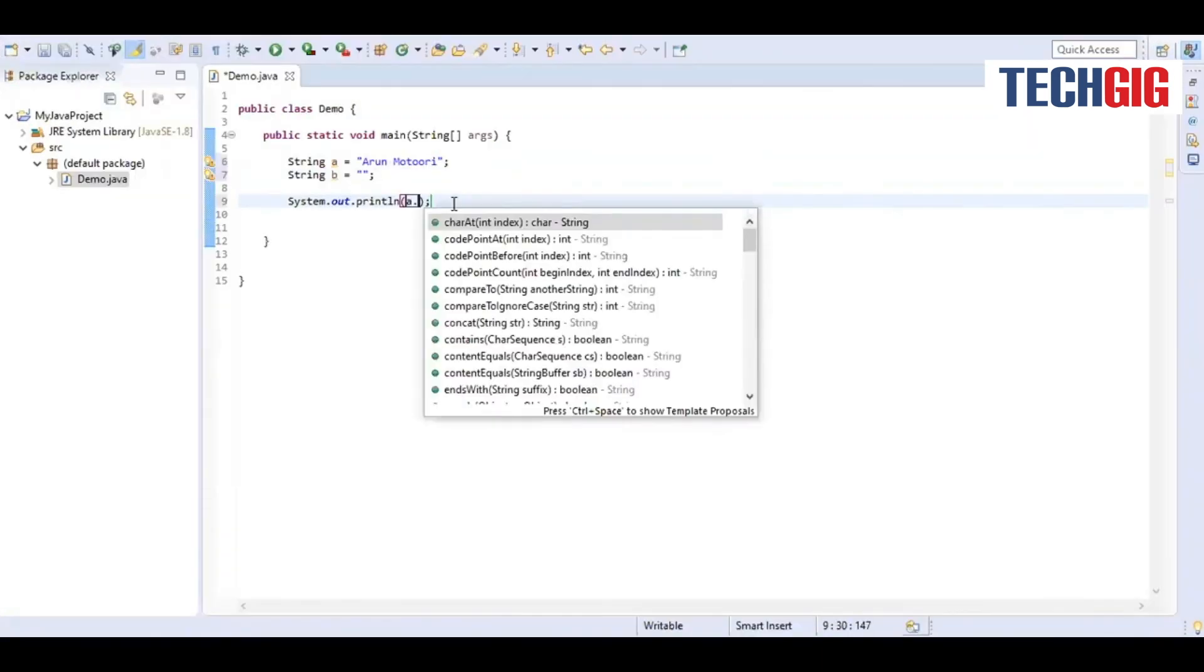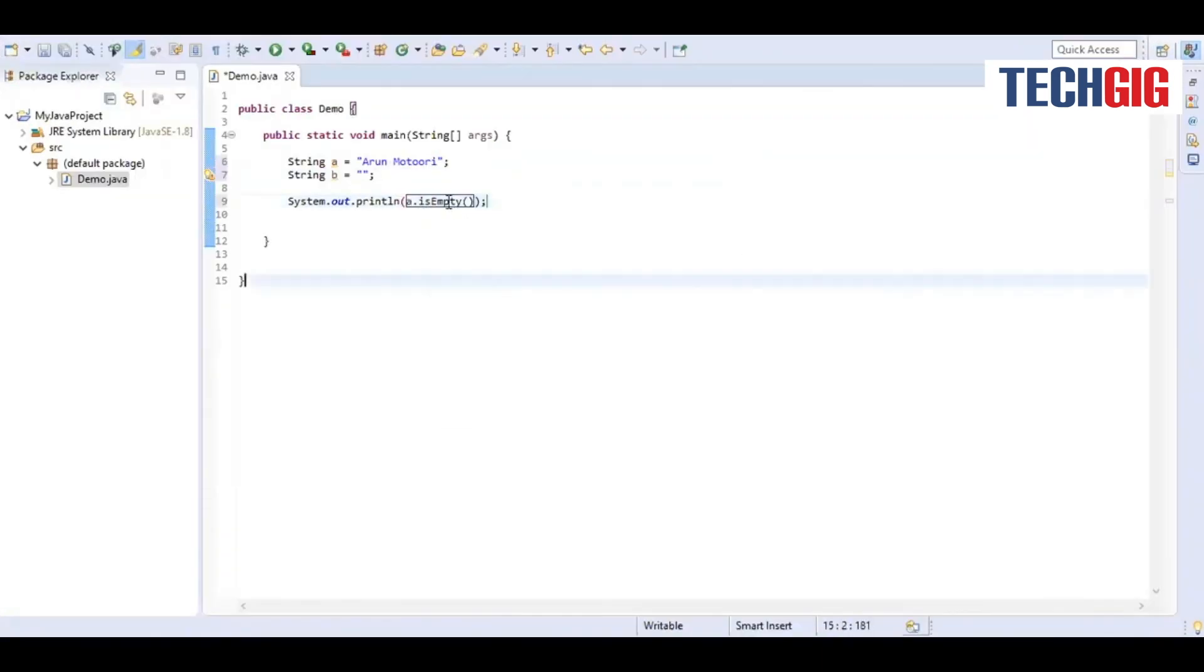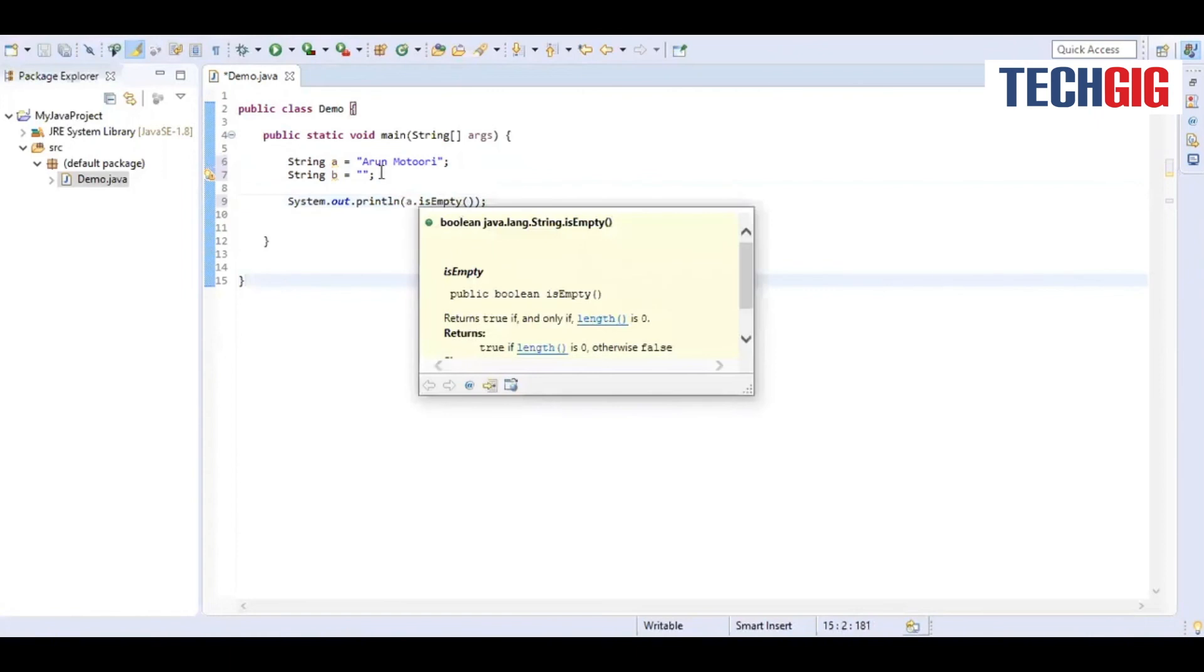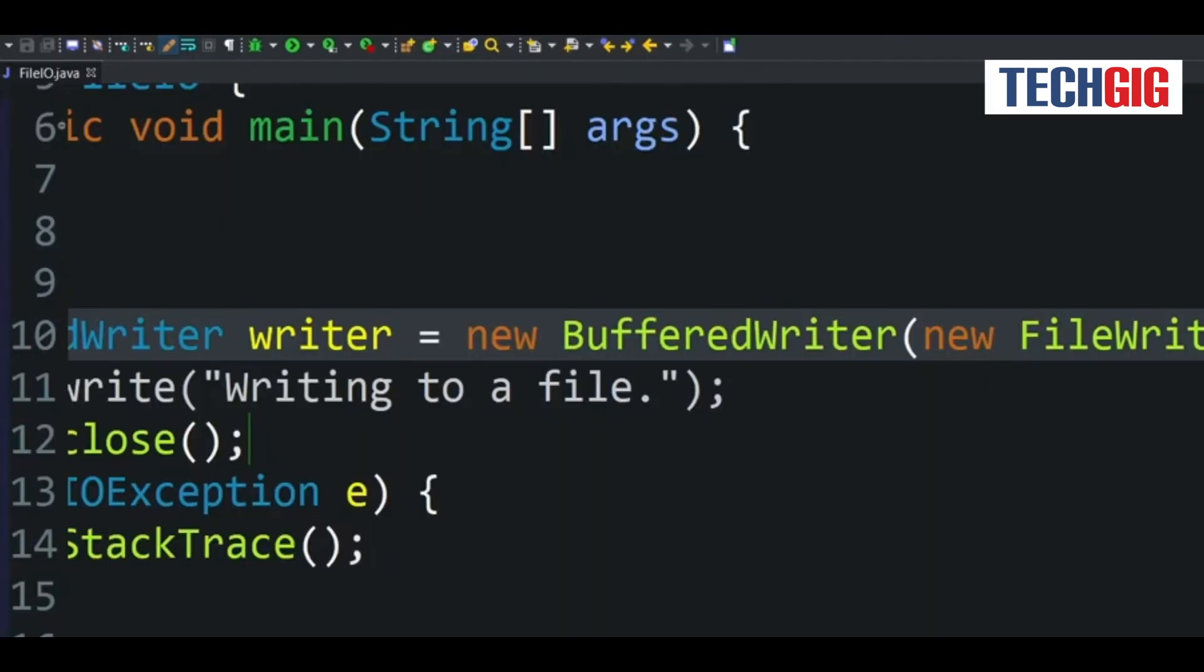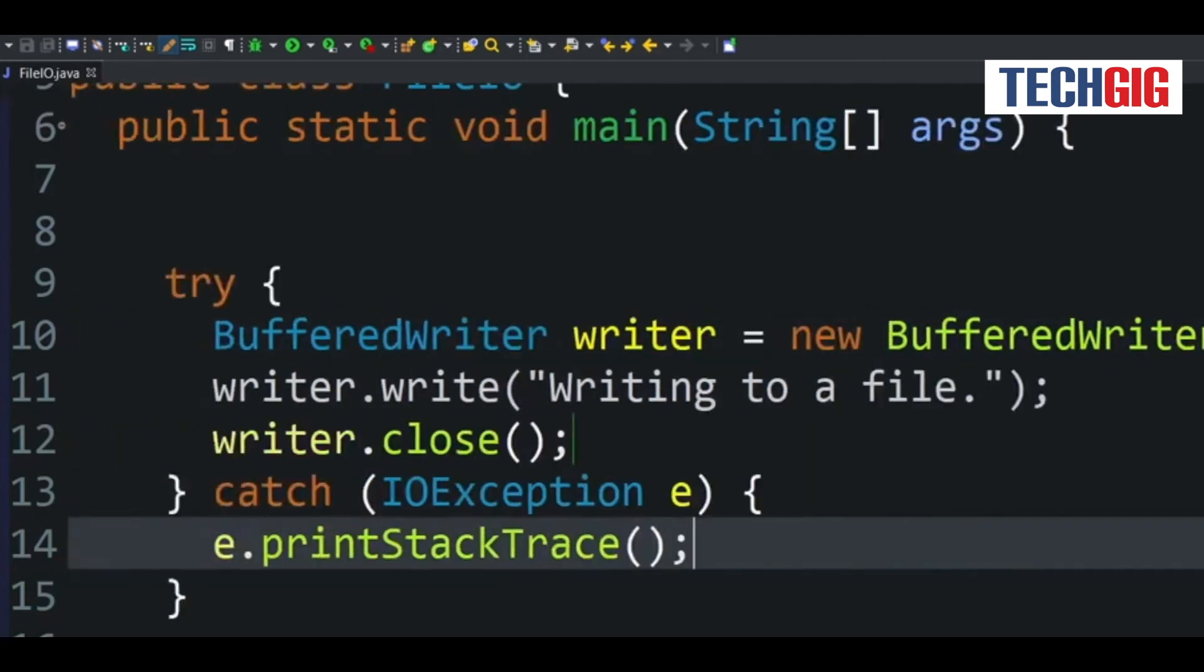Size returns the number of key value pairs that are accessible in the map. Values is used to create a collection from the values of a map. It basically returns a collection representation of the HashMap's values.